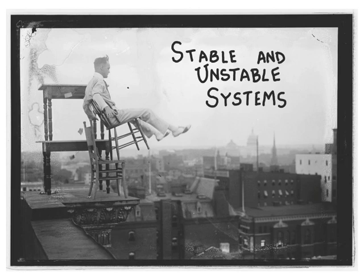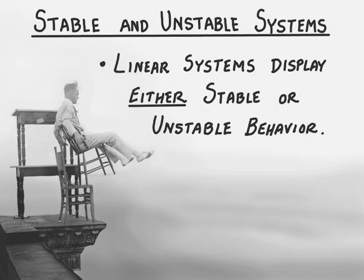We want to understand precisely what this term means and how we can test for stability or instability. Back when we discussed linear and nonlinear systems, I mentioned that linear systems can have only one equilibrium, while nonlinear systems can have many equilibria. This is important when we consider stability, because a linear system has to display either stable or unstable behavior. The stability of a nonlinear system is much more tricky, because it's highly dependent upon the initial conditions and the input.